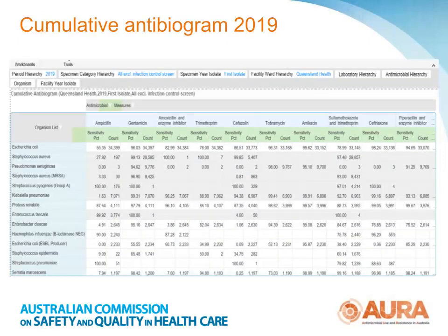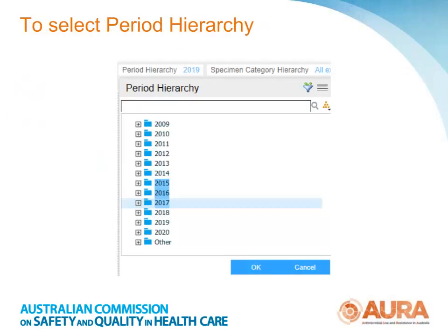This is the cumulative antibiogram workboard for Queensland Health. In this case the filters applied are the year 2019, all specimens excluding infection control screens, the laboratory service, and the first isolate per person per specimen per year. To change any of the filters applied, select the slicer — for example the period hierarchy. This opens a slicer and you can choose another year by selecting or highlighting it. Choose 2017, or multiple consecutive years by holding the shift key down and selecting 2015 to 2017.